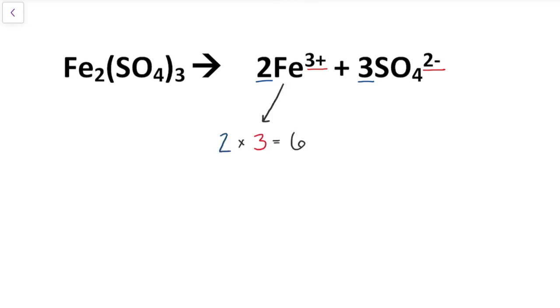Now if you look at the sulfate, it dissociates into three sulfate molecules, each with a charge of negative two. If you multiply the number of molecules, which is three, by the charge of two, you get a valence of six. This means that the valence of iron sulfate is six.